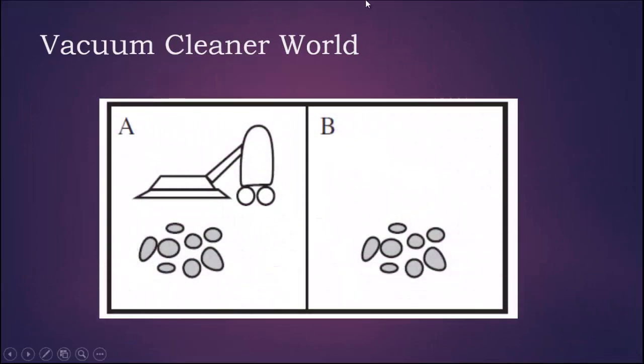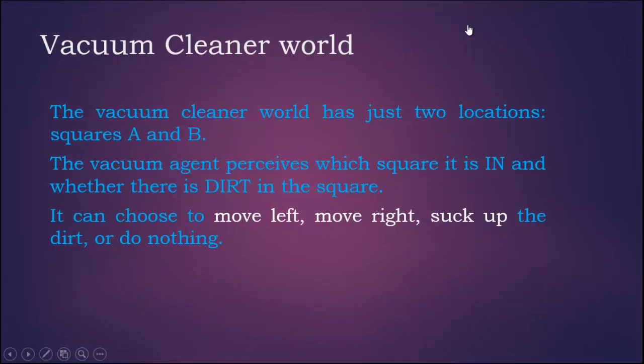We will explain these topics with the help of vacuum cleaner world example. The vacuum cleaner world has just two locations, tiles A and B. The vacuum agent perceives which square it is in and whether there is dirt in the square or not.